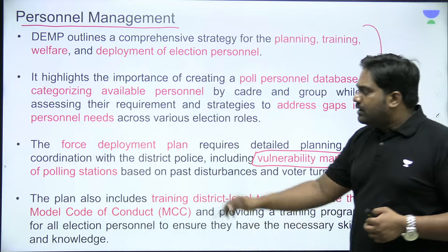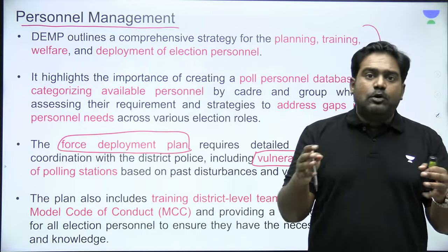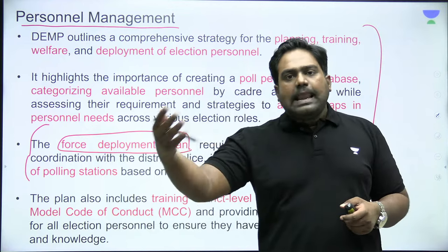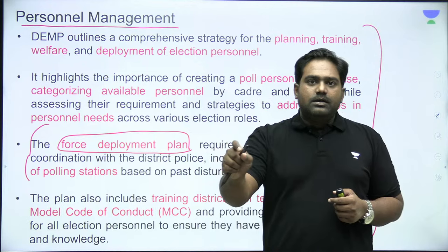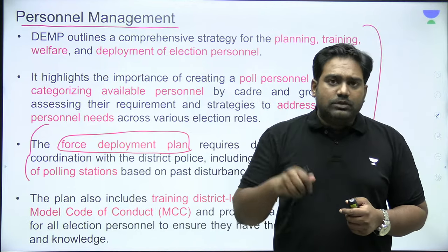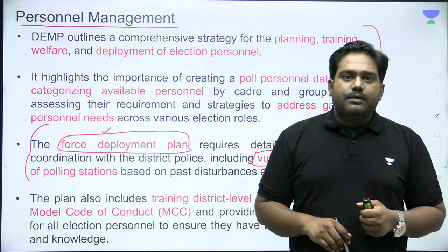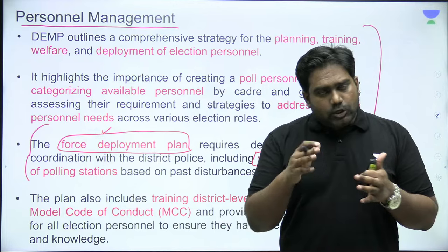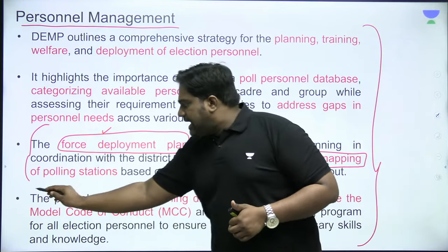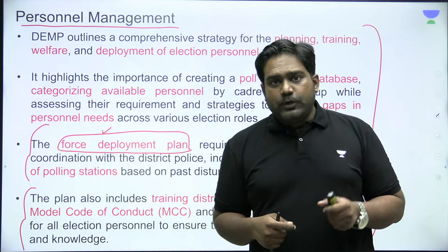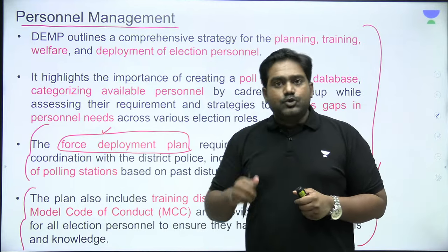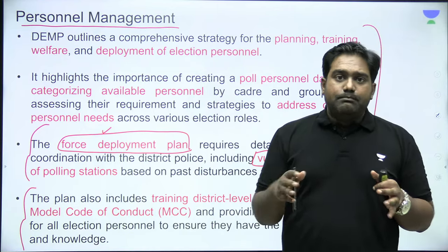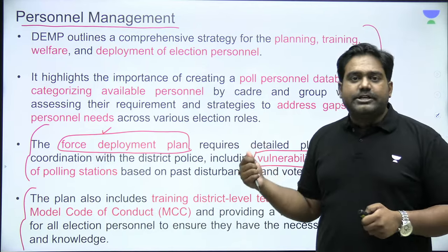All such data is part of the District Election Management Plan. There is a vulnerability mapping done with regard to the security threat present in every district and at every polling station. At high-risk stations, more forces can be deployed. For instance, if there was a clash between two parties at a polling booth in previous elections, that can be red-flagged as a vulnerable polling booth and more forces deployed. Previous MCC violations are also documented, so the Election Commission knows which candidates are more prone to commit violations and can monitor them more closely.